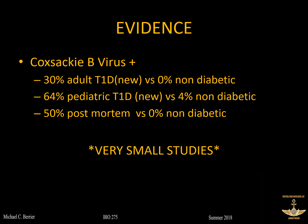The evidence: one study found about 30% of new-onset adult type 1 diabetics had Coxsackie B RNA in their blood at time of onset, versus zero percent of controls. Another study in kids found that 64% of new-onset diabetics under six had Coxsackie B RNA versus only 4% of controls. A post-mortem evaluation found about half of people who died from diabetic complications had Coxsackie B in their pancreatic cells — which were damaged — versus zero percent of controls. However, these were very small studies, enrolling about 50 diabetics total, so they are not definitive — but certainly thought-provoking.